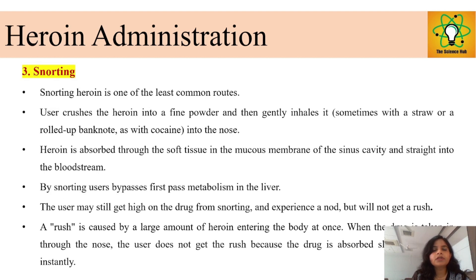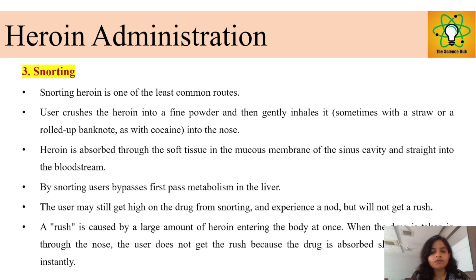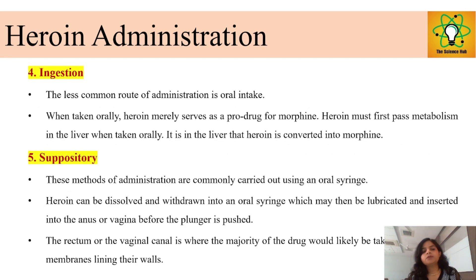Snorting is a route by which people take heroin directly into the nose. This method is the least used. The heroin is crushed into a fine powder and gently inhaled, similar to cocaine and other drugs. Heroin is absorbed through the soft tissue in the mucous membrane of the sinus cavity and goes directly to the bloodstream. Snorting bypasses first-pass metabolism in the liver. However, the user does not get a rush because the drug is absorbed slowly rather than instantly.